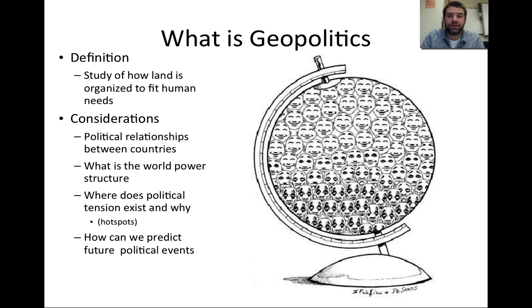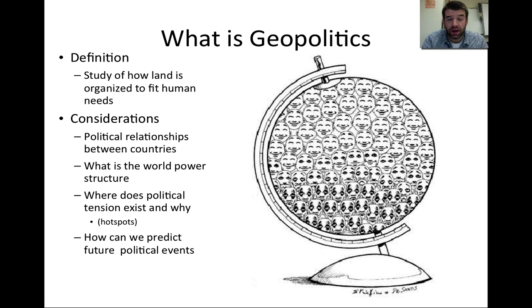Today, the video we're focusing on is really looking at some of the things that aren't clearly highlighted in the Rubenstein text, but something you should be prepared to see on an AP test and even our coming test on Thursday. We've been talking a lot about political geography and how land is distributed and organized to fit human societies. Today we're going to focus on some of the historical theories, concepts, and models that have been used and would likely be referred to on an AP exam.